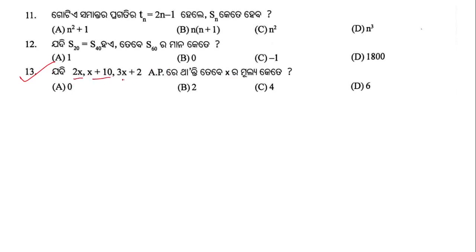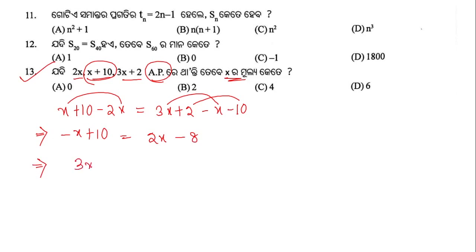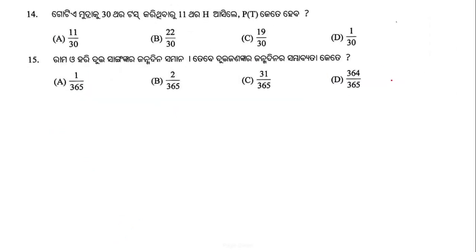Question number 13: If 2x, x + 10, and 3x + 2 are in AP, find x. For AP, t2 - t1 = t3 - t2, so (x + 10) - 2x = (3x + 2) - (x + 10). This gives -x + 10 = 2x - 8, so 3x = 18, thus x = 6. Option D is the right answer.